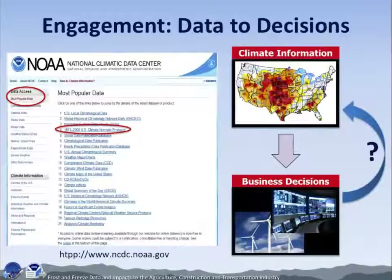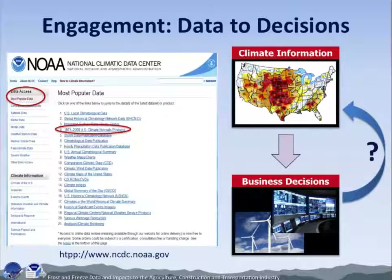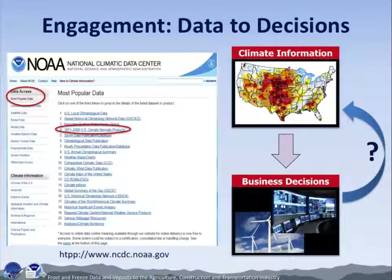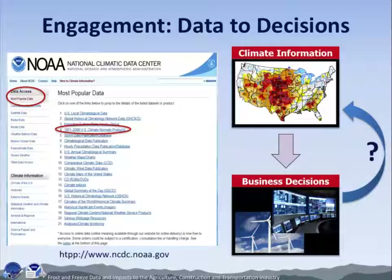What does this mean when it comes to engaging with our users? Frost and freeze is just one of many products available here at NCDC and accessible on our website. The image here shows a list of our most popular products. As we provide this information to the public, we're trying to get a better understanding of how that information is being used by the business community, because that information can then be fed back into product development. Does terminology make a difference? Does spatial resolution make a difference? It's a continuous dialogue — it's not just about us pushing out data.